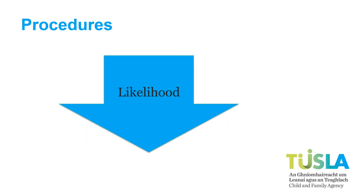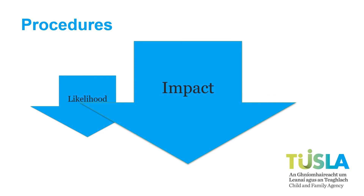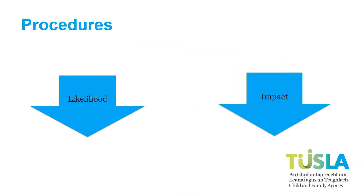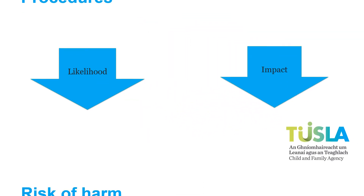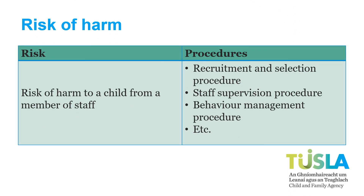Once you have identified the risks, you need to identify or develop procedures to reduce the risks. These procedures could be used to reduce the likelihood of the risk occurring or to reduce the impact of the risk should it occur. For example, in relation to the risk of harm to a child from a member of staff, your recruitment procedures would be one way you reduce the likelihood of this risk occurring. The risk and associated procedures should be listed in your risk assessment to show what procedures are in place to address which risks.